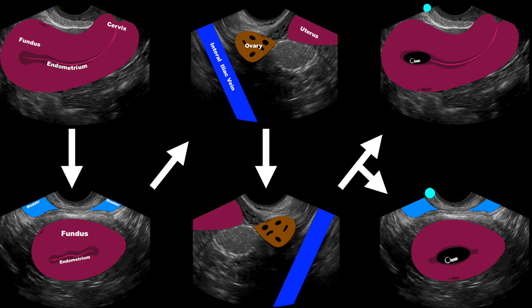The transvaginal protocol mirrors the transabdominal approach: we start with the probe marker towards the patient's head in a long axis view, scanning from right to left; then rotate towards the patient's right, scanning from the fundus to the cervix in a short axis view; then right adnexa, left adnexa, and then any pregnancy-related contents or adnexal masses or structures that we identify.